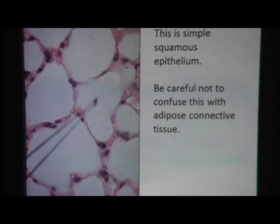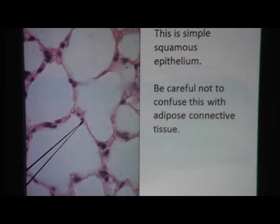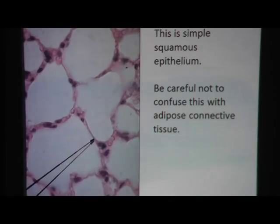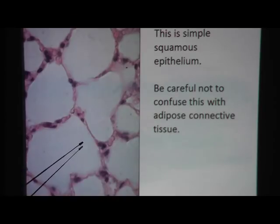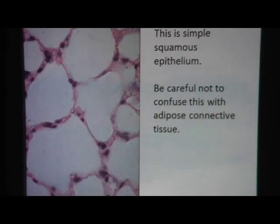That low nucleus count will help you distinguish adipose from simple squamous epithelium. This is simple squamous epithelium — this is not adipose tissue. What gives it away? The nucleus. Here there are way too many nuclei, because each of these is actually one cell with its own nucleus. In adipose, the whole large round structure is one cell. In simple squamous, that large open space is an air sac in the lungs. At first glance they might look very similar, but pay attention to the nucleus and that will help you get the right answer.